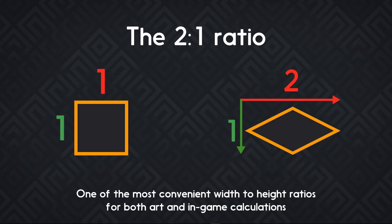As far as the art is concerned, to produce the rhombus on the right from the square on the left, rotate the square by 45 degrees clockwise, then you squash its height — you divide it by 2. You still have to scale it to give both figures the same size, but that's the idea.